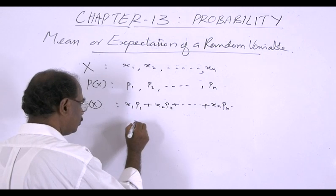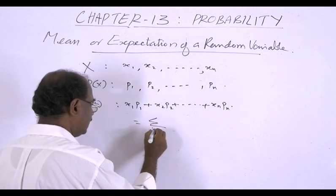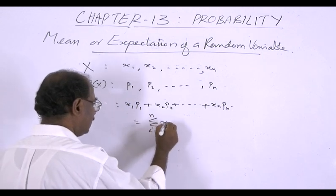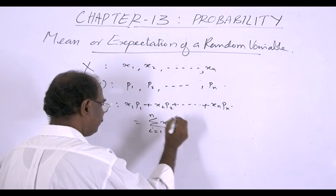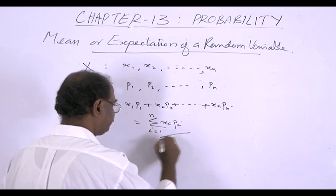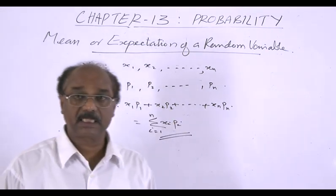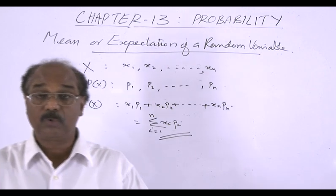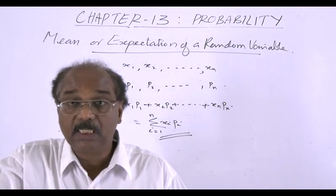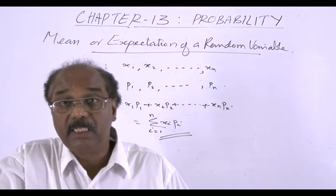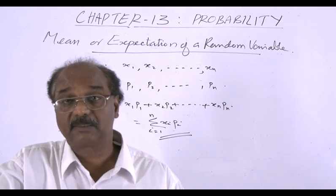This is again equal to sigma i from 1 to n of xi·pi. This is the expectation, or mean value, of the random variable x.